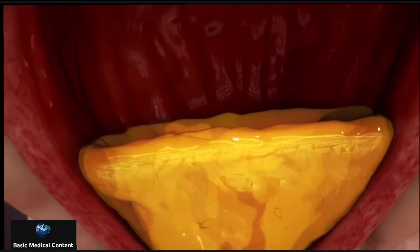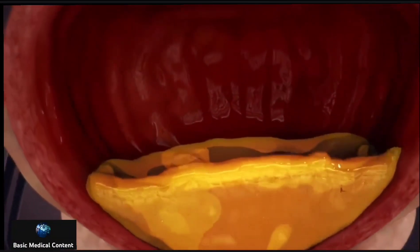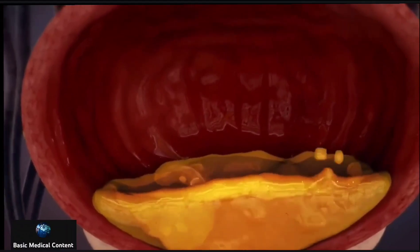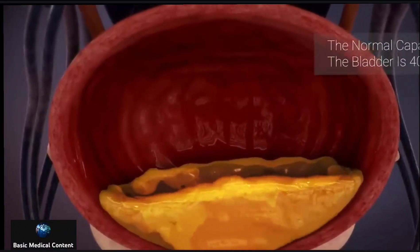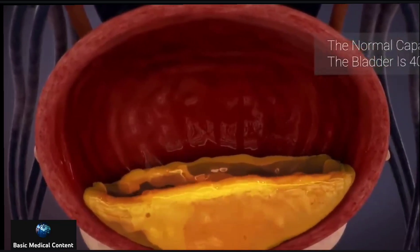The bladder's walls relax and expand to store urine, allowing urination to be controlled. The normal capacity of the bladder is 400 to 600 milliliters.